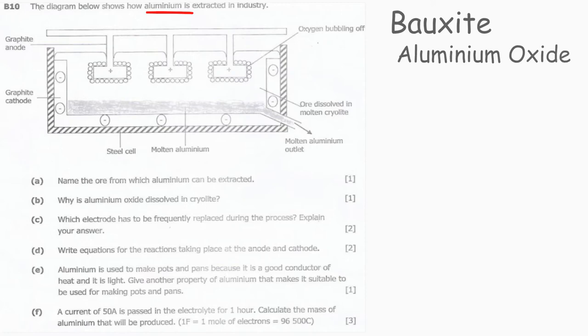Question B: Why is aluminum oxide dissolved in cryolite? Aluminum oxide is dissolved in cryolite to lower its melting point, because it has a huge melting point.